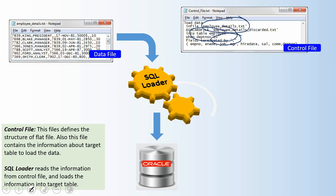SQL Loader typically reads the control file first, then from the control file it reads the necessary information, then reads the data from the source file and inserts it into the target table specified in the control file. These are the two input files used by SQL Loader.